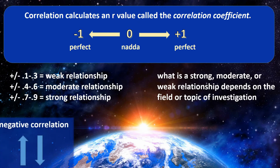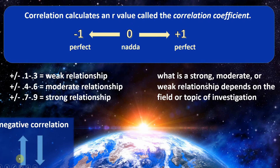Now let's talk about what the sign of the r value tells you. The number itself — whether it's 0.1, 0.3, 0.6 — tells you how weak, moderate, or strong the relationship is. But the sign — positive or negative — tells you the direction of the relationship. A negative r value means that as scores increase in one variable, they decrease in the other — the scores are moving in opposite directions. As X increases, Y decreases, or equivalently, as Y increases, X decreases.